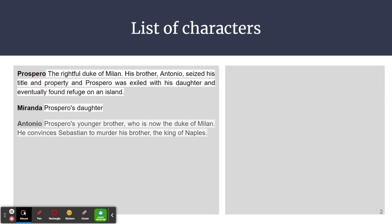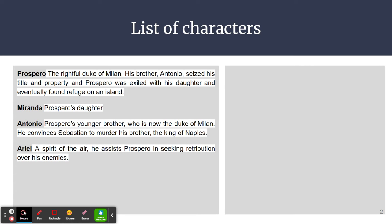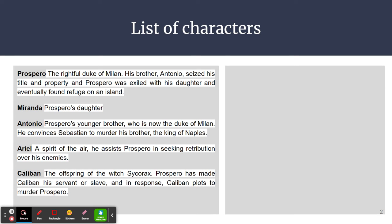Miranda is his daughter. Antonio is Prospero's younger brother, who is now the duke of Milan. He convinces Sebastian to murder his brother, the king of Naples. Then there's another character, Ariel. He is actually a spirit of the air who assists Prospero in seeking retribution over his enemies. A similar character is Caliban. He is the offspring of the witch Sycorax. Prospero has made Caliban his servant or slave, and in response, Caliban plots to murder Prospero.